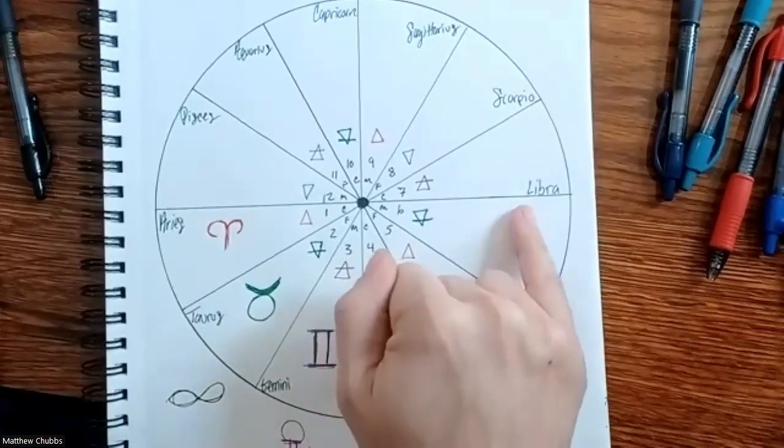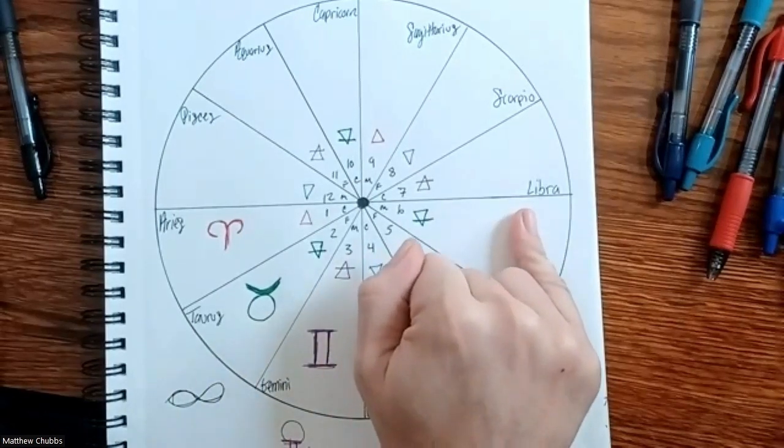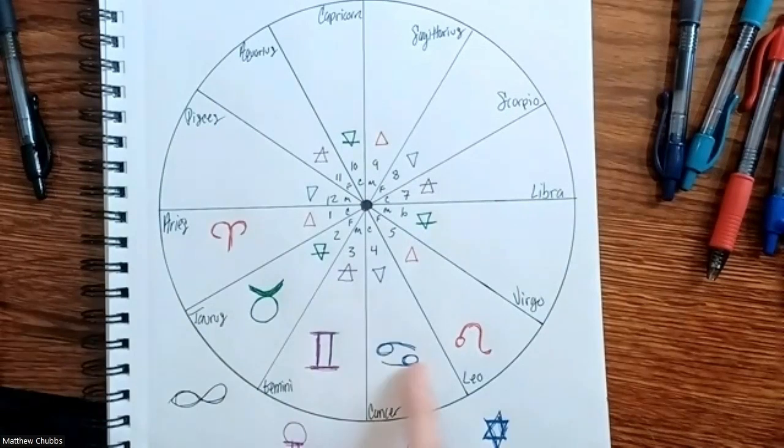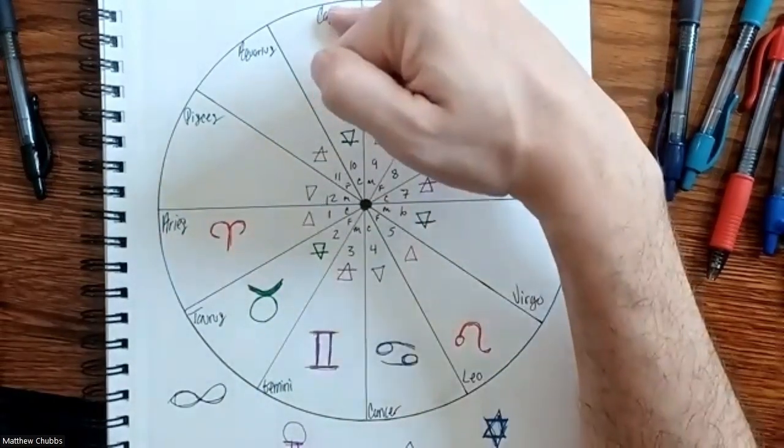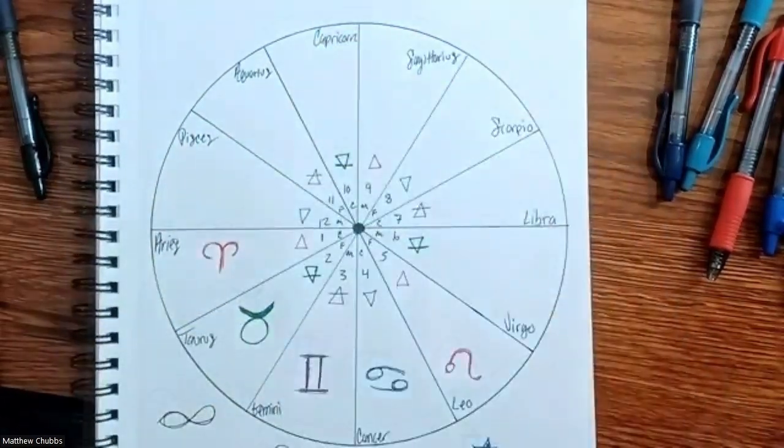And then if you were to count a full-term pregnancy from March 25th, you'll see that it goes all the way to Capricorn December 25th, which is Jesus' birth, which is actually the birth of Christ's consciousness.